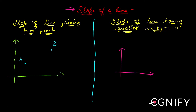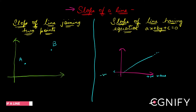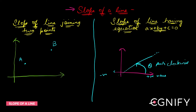In my coordinate system, if I have a straight line — something like this — a straight line extends in all directions. The angle through which I'll have to rotate the positive x-axis anti-clockwise to reach that line — let that angle be theta — then tan of that angle is called the slope.